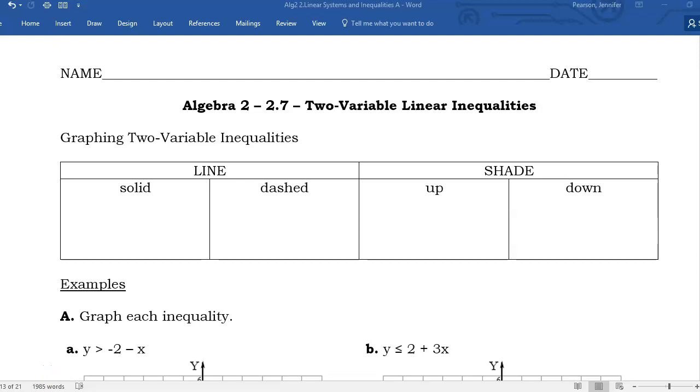This is Algebra 2, lesson 2.7, two-variable linear inequalities. We are going to be graphing on an xy-coordinate now because we have two coordinates, and when we do that, we're going to have some shading just like with the one variables.